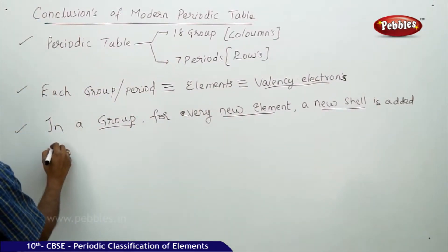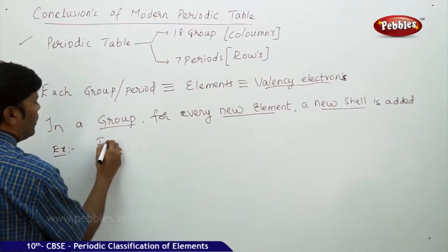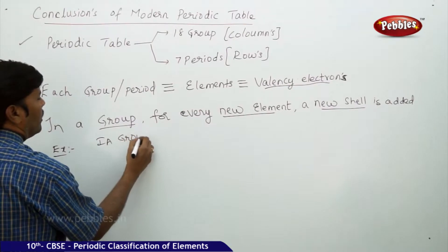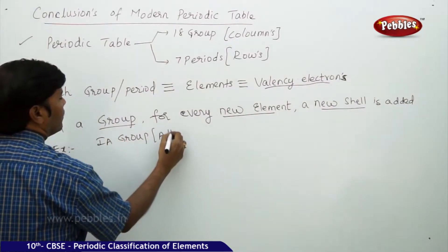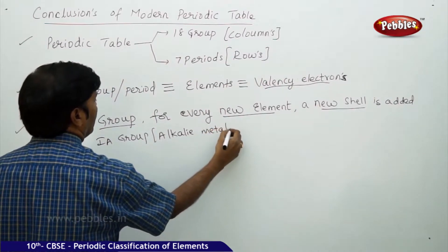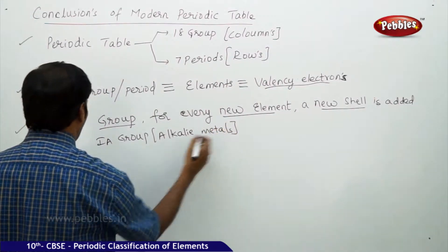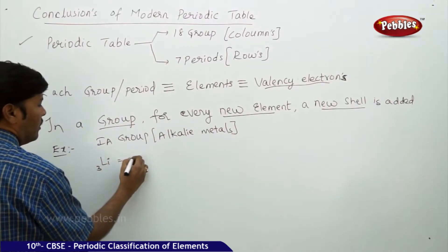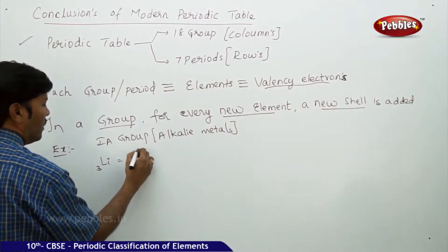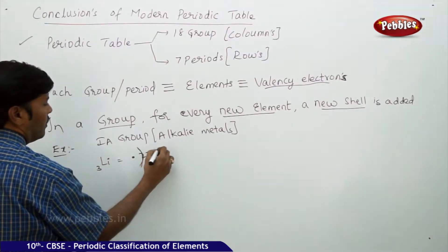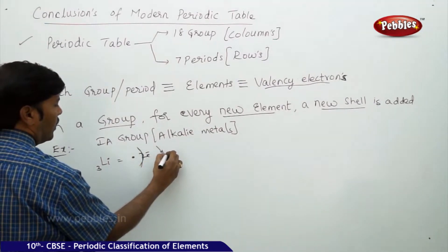For example, take Group 1A — the alkali metals. Take lithium, atomic number 3: nucleus, first shell two electrons, second shell one electron.